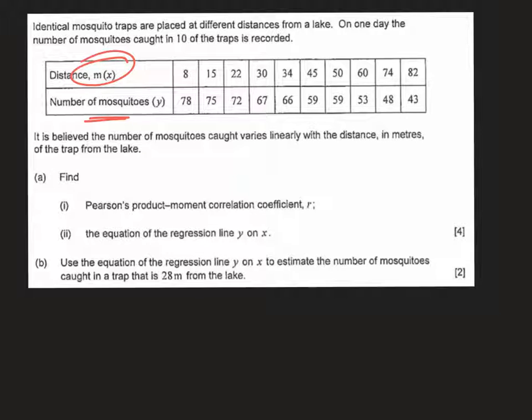And we're asked to find the PMCC, or as we normally talk about it, R, which measures the strength of this relationship between distance and mosquitoes. So all you're going to do is take your calculator, go to stats, edit, and enter this row here as L1 and this row here as L2. You're then going to go to stats, calc, y equals ax plus b, and enter.